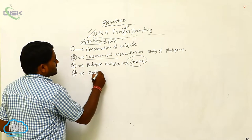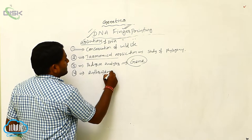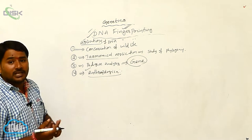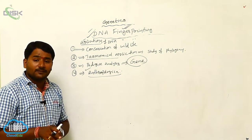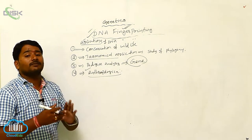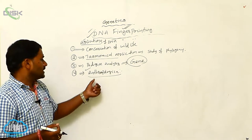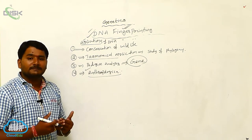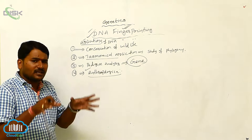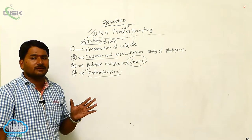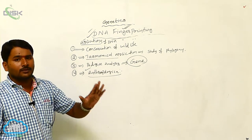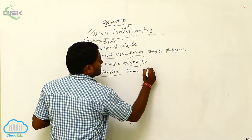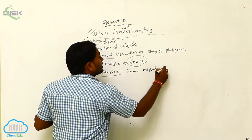The next application is anthropological study. It is used for the study of the origin of man, migration of man, and behavior of man. Anthropological study is only related to the study of human beings' origin, migration, and behavior — human migration, distribution, and behavior.